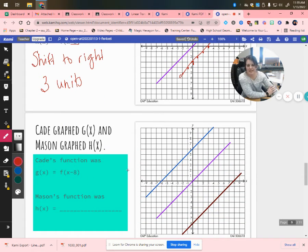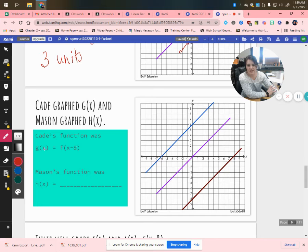Alright, so Kate graphed g(x) and Mason graphed h(x). So let's label these. Of course, which one is f(x)? If you said purple, you are correct. So which graph is Kate's, red or blue? Minus 8. So we're going to pay attention to, because it's inside parentheses, we're going to pay attention to the horizontal translation. What happened to get from here to here? We subtracted 8. To get from here to here, we added 6. So we know this must be Kate's. So this must be Mason's.